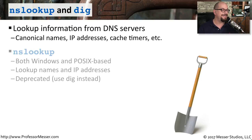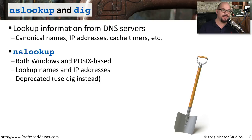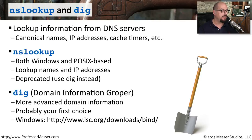One very common tool is NS Lookup, available on Windows and POSIX-based systems including Linux, macOS, and others. It's a utility where you can put in an IP address or a device name and it will perform a lookup or reverse lookup. Although NS Lookup is still available on most operating systems, it has been deprecated, and they highly recommend using the more updated utility DIG — which stands for Domain Information Grouper. DIG provides a lot more detail about what it finds on the DNS server, with many more options than NS Lookup.